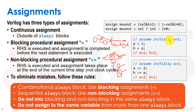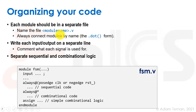Going back to our slides on organizing code: each module should be in a separate file named module.v for two main reasons. First, if there's a syntax error it's easy to find the module since there's only one per file. Second, it makes code reuse easy — you can replace one module with another by changing a single file. It doesn't cost anything to have more files regardless of module length.